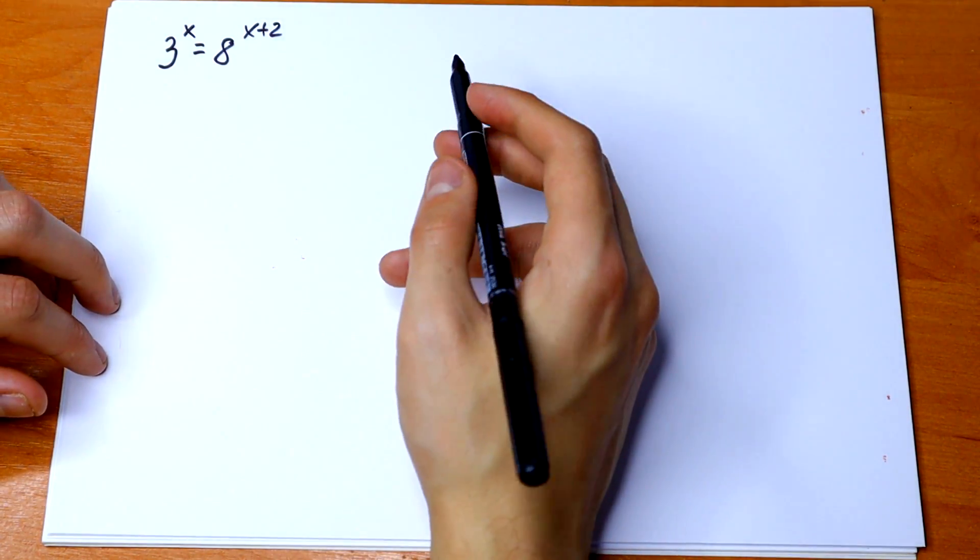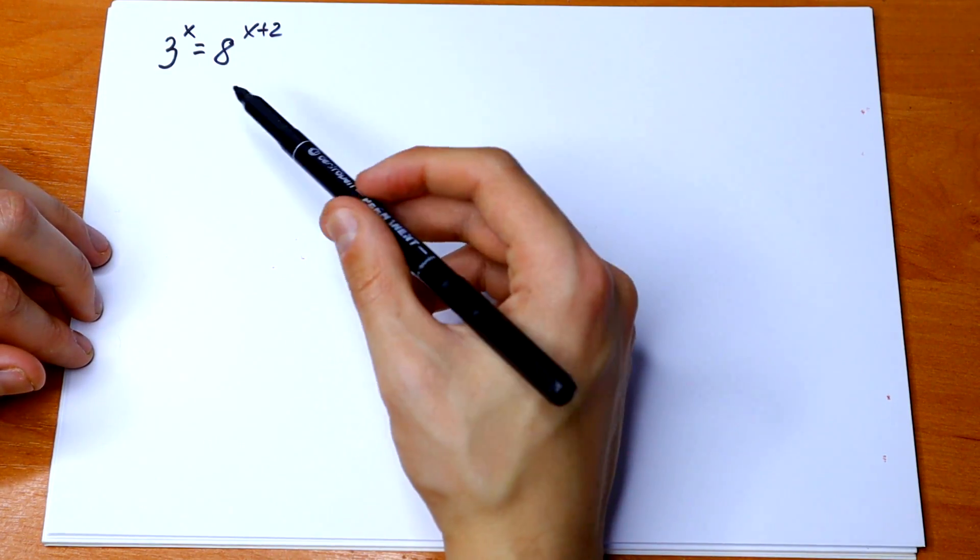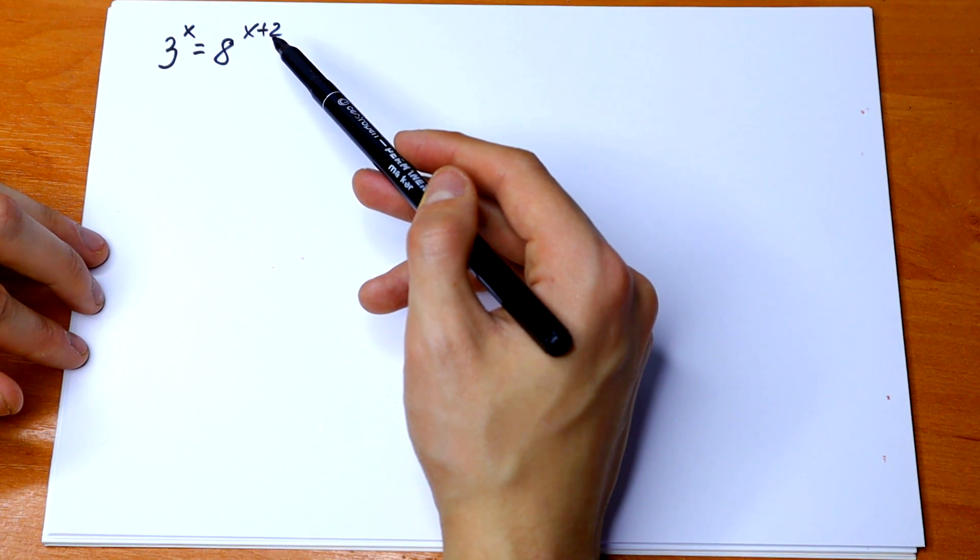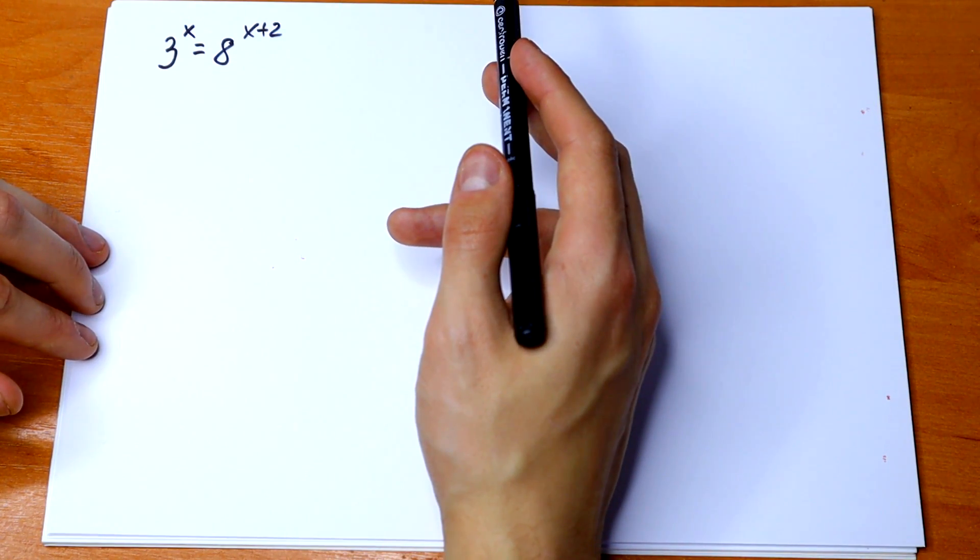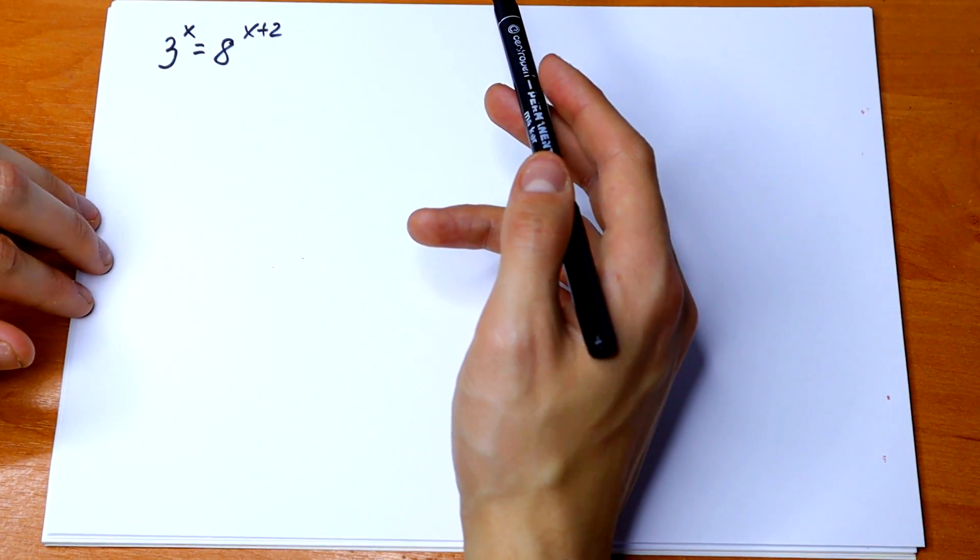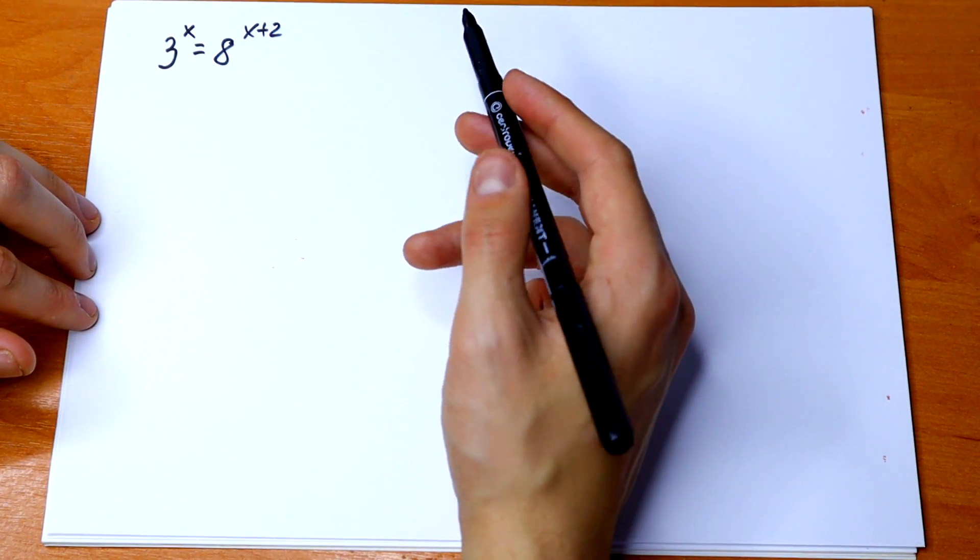So at first sight this equation is really hard because we have all different bases and all different exponents, but we can solve this in like 2-3 minutes. So if you have any suggestion, if you know an answer, write your answer in a comment. So let's start.